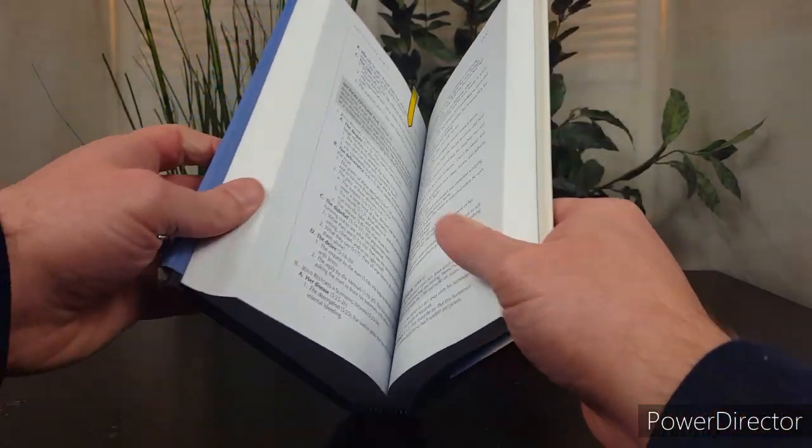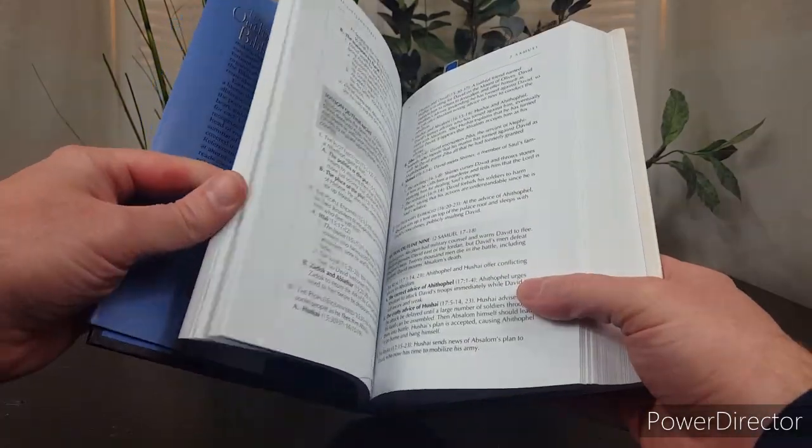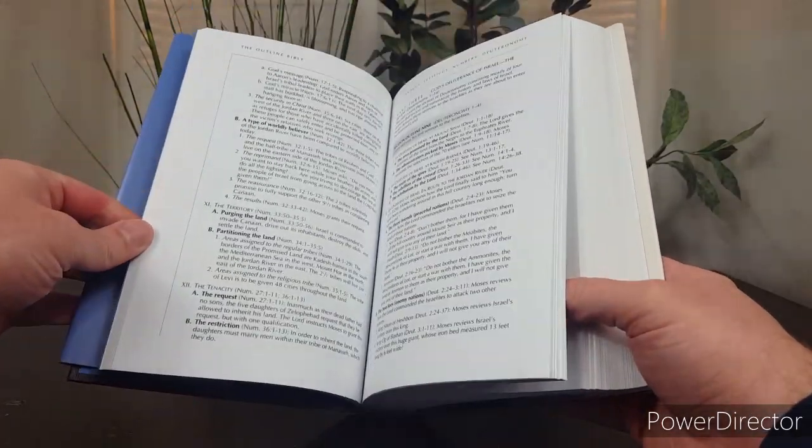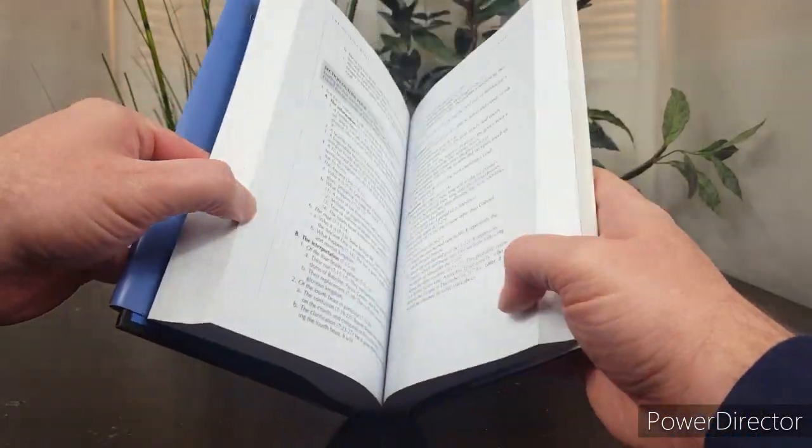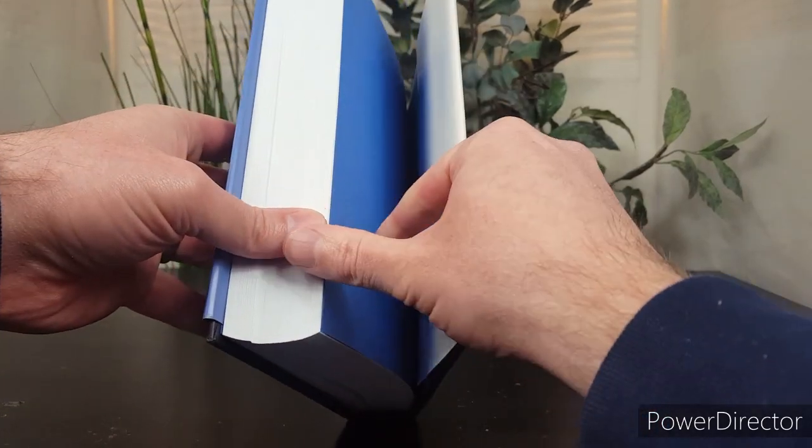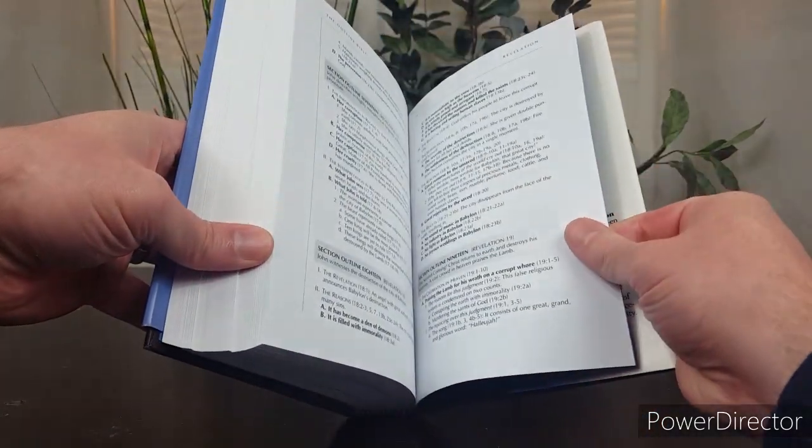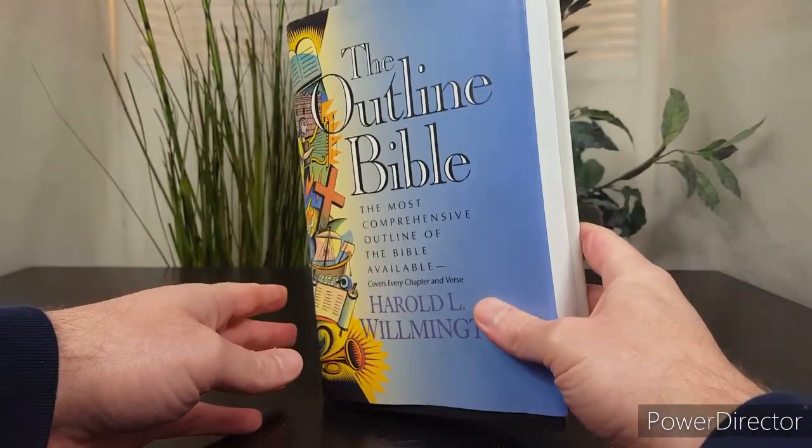So, again, every book of the Bible, every passage of the Bible, every verse of the Bible is organized in this outline form. It's actually a pretty heavy book, because there's so much material covered. It's almost 800 pages in length.